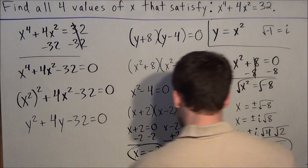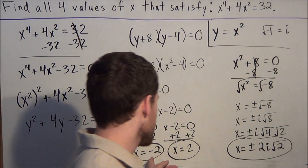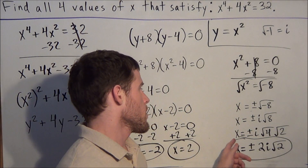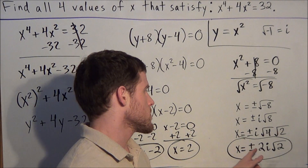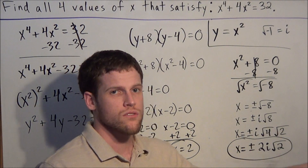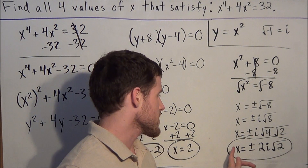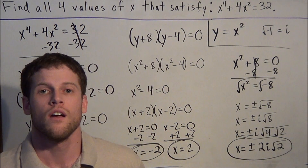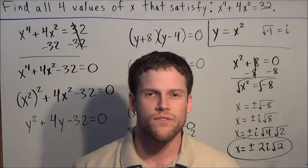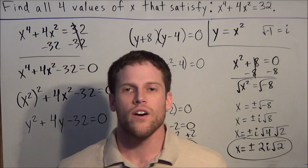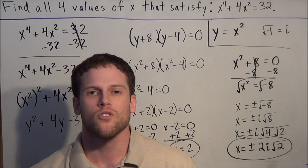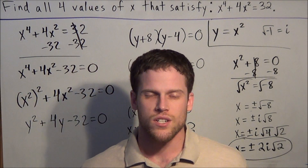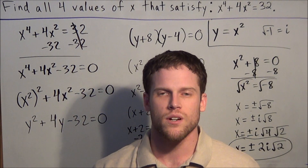So we have four solutions: x equals negative 2, x equals positive 2, x equals positive 2i radical 2, and x equals negative 2i radical 2. This concludes this video on finding the roots of a polynomial equation. Thank you all for watching, and I hope this was helpful.